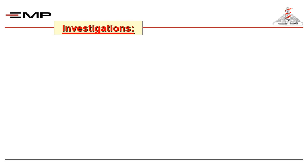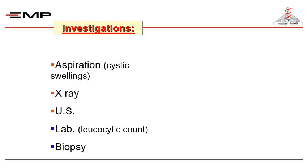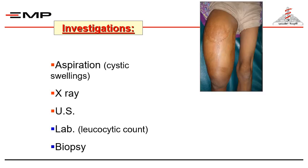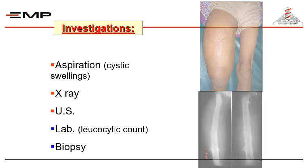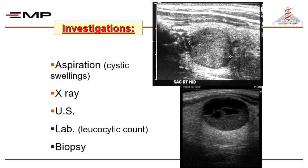There are some investigations that can provide very important information about swellings. Aspiration is a bedside maneuver that can be done for cystic swellings to confirm diagnosis and send aspirate for bacteriological and cytological examination. A plain x-ray can diagnose bone tumors. A blood picture may show leucocytosis in bacterial inflammation. Ultrasound can clearly differentiate cystic and solid swellings. Biopsy — whether aspiration through a cut needle, incisional biopsy, or excision biopsy — will provide the histopathological diagnosis.